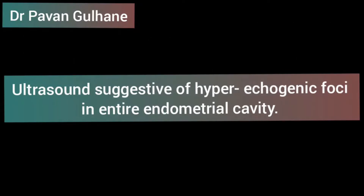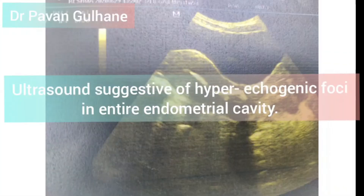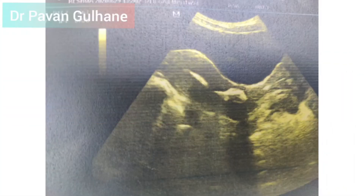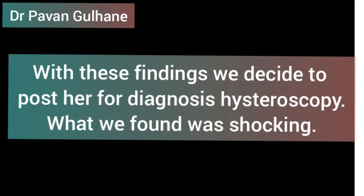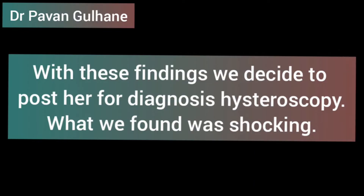She had a history of single abortion and D&C, and later presented with secondary infertility and hypomenorrhea. The ultrasonography was suggestive of some hyperechogenicity in the uterus.